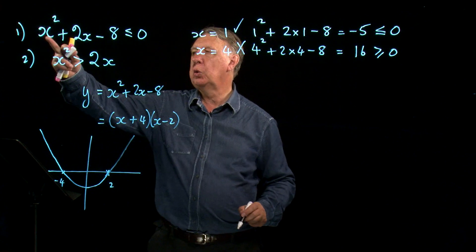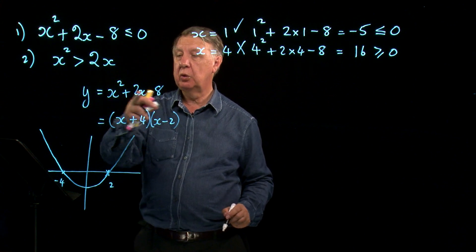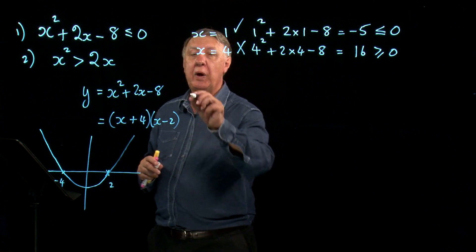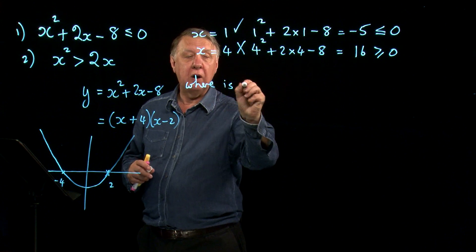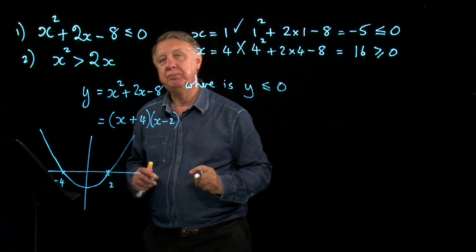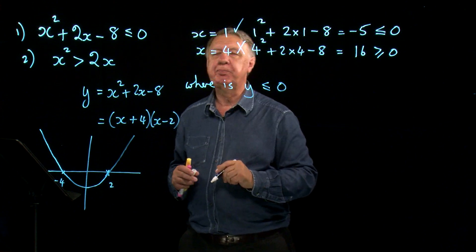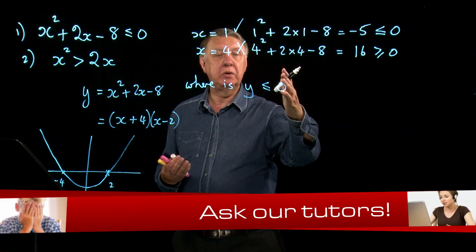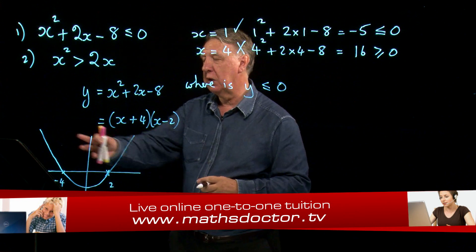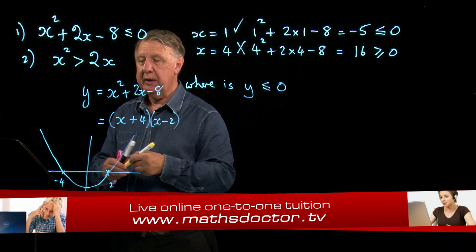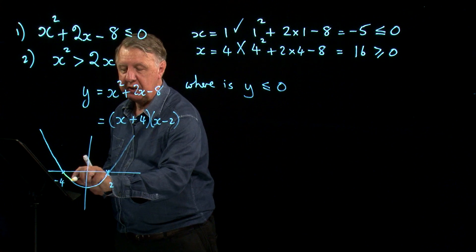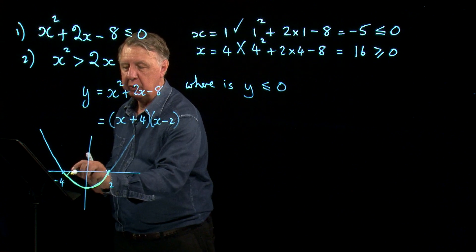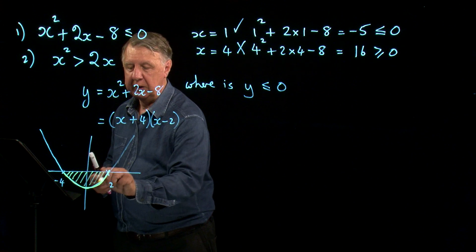All of this is y. So the inequality is actually saying to me, where is y less than or equal to 0? What does less than or equal mean? It means below. Where is y below or equal to 0? Well, if we look at the graph, then y will be below 0 or equal to 0 all the way along there. In other words, here.